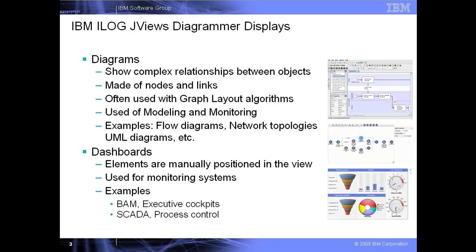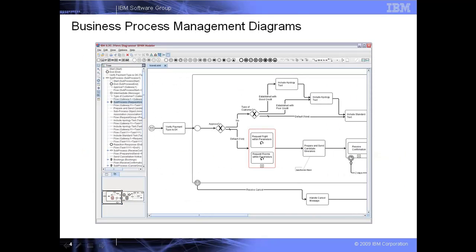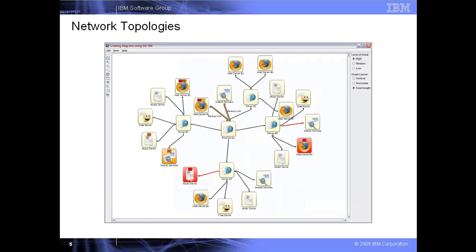Now let's look at some examples. Here we have a picture of a business process model built with JVUES Diagrammer implementing the BPMN standard. BPMN stands for Business Process Model and Notation and is a recognized standard in the BPM community. In this screenshot, we have another type of diagram showing a network topology.